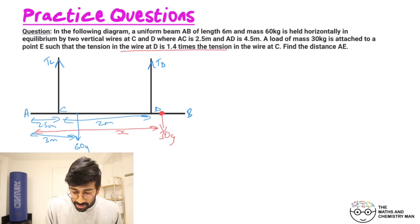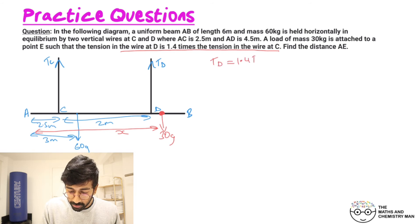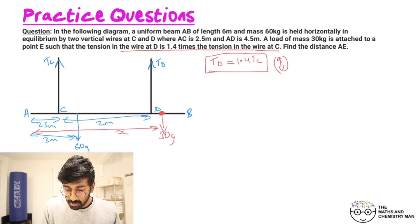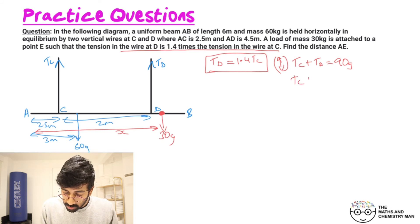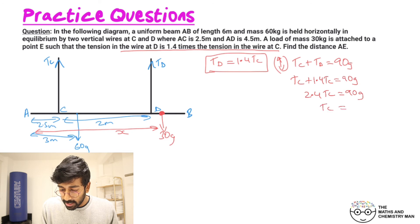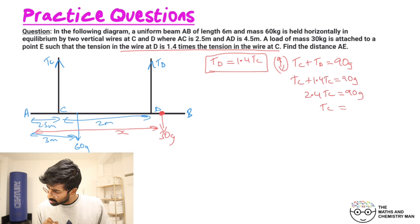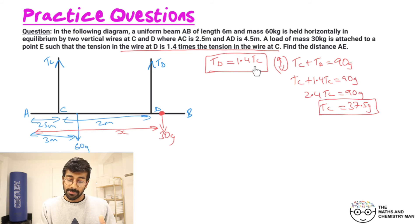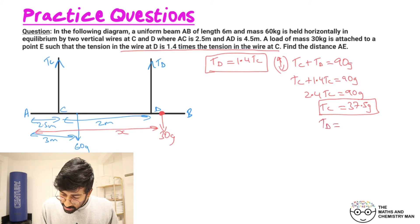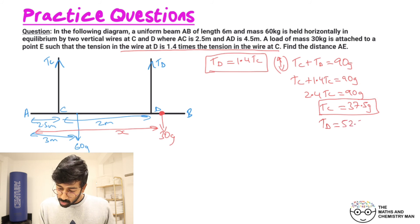We're told Td = 1.4Tc. Resolving vertically: Tc + Td = 90g (60g + 30g). Substituting: Tc + 1.4Tc = 90g, so 2.4Tc = 90g, giving Tc = 37.5g. Then Td = 1.4 × 37.5g = 52.5g.